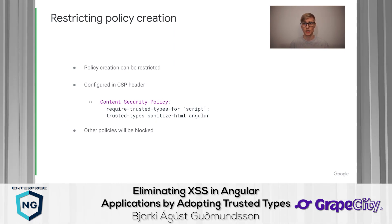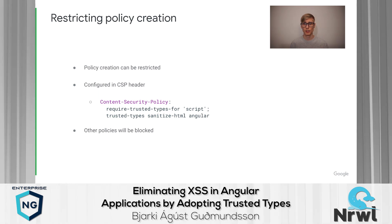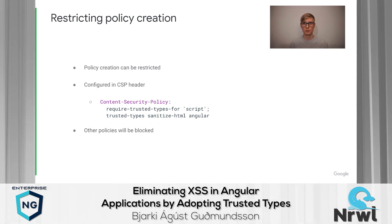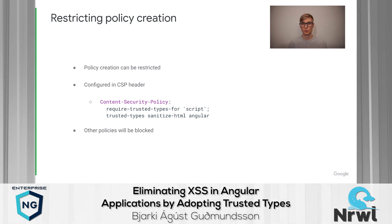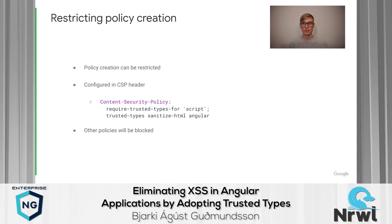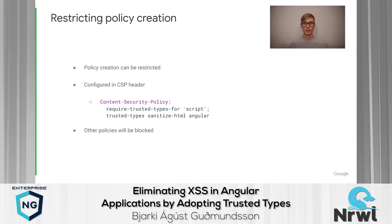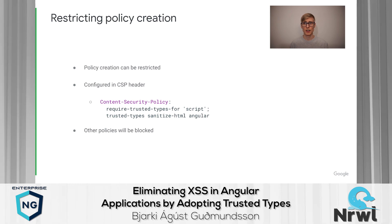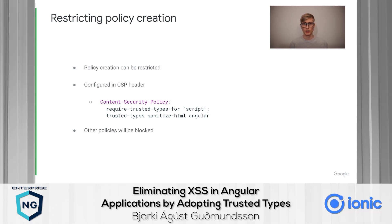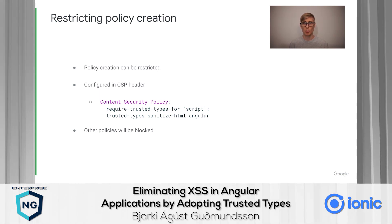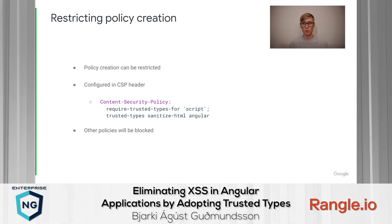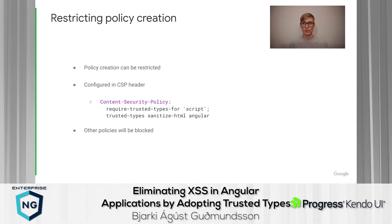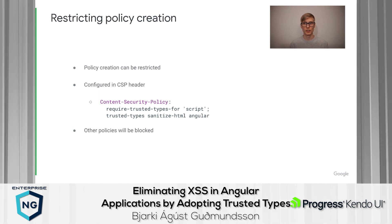One final feature of trusted types I want to tell you about is restricting policy creation. This is useful because once you've rolled out trusted types, trusted types policies will remain as the only place where security-sensitive code lives in your application. Policy creation can be restricted by explicitly listing the names of the allowed policies in the trusted types directive in your CSP header. In the example on the slide, only the two policies named SanitizeHTML and Angular are allowed. Trying to create a policy with any other name, or using the same name more than once, will result in a trusted types violation. Restricting policy creation gives you even stronger guarantees about security, and is especially useful in enterprise-scale applications where you may not want developers creating arbitrary trusted types policies.